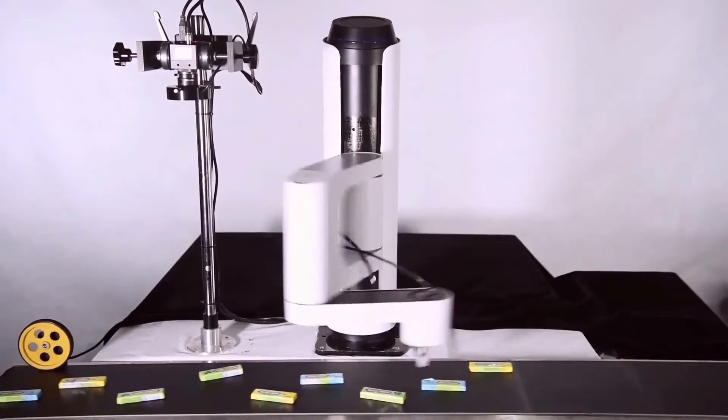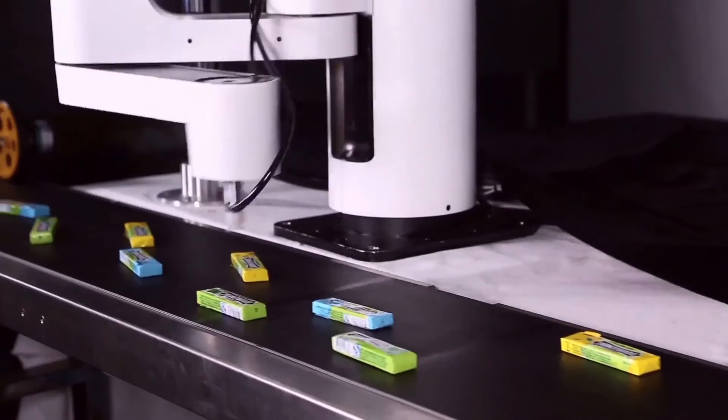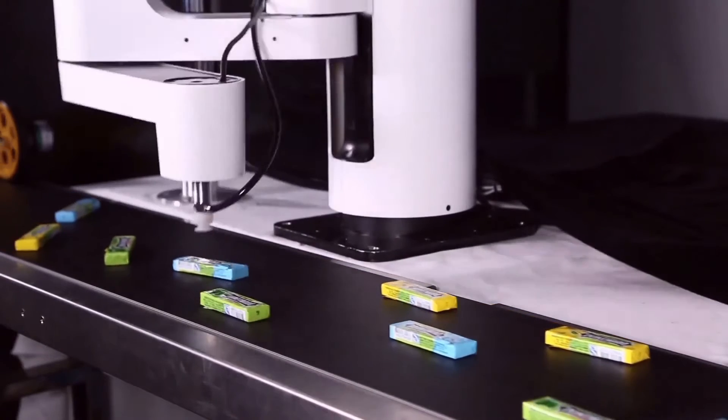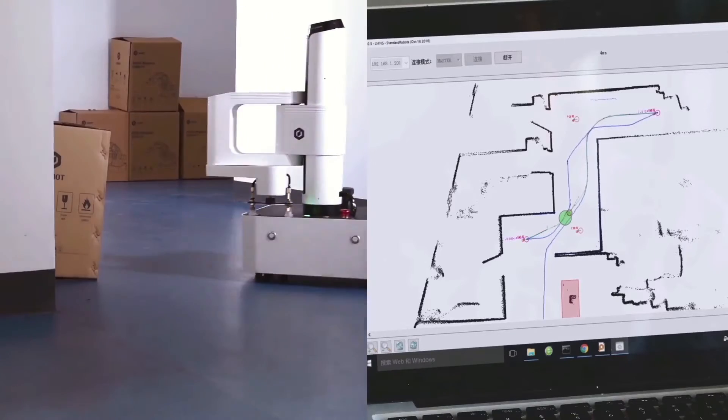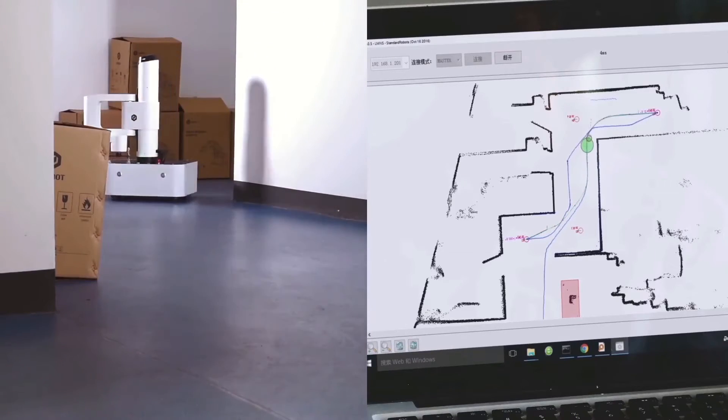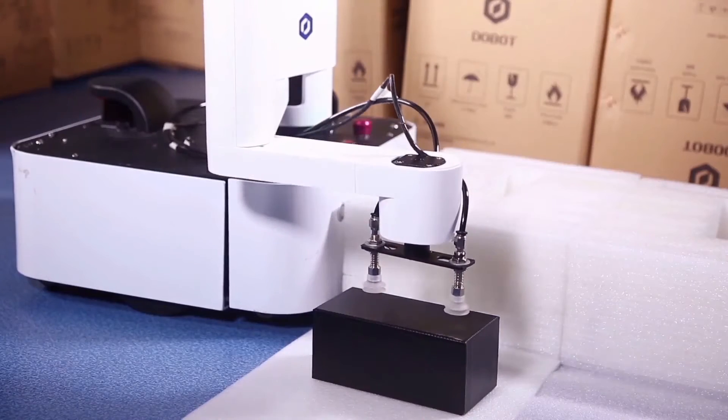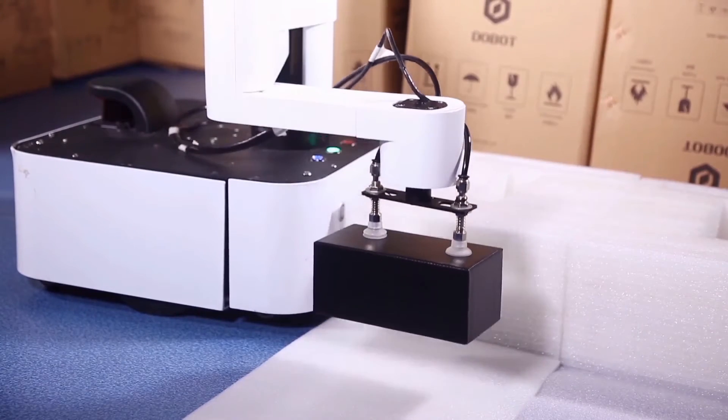Ultimately, Dubot M1 is built to replace manpower and production line, working day and night non-stop. The built-in mapping and path planning system provides this excellent mobility, providing inventory management service in your warehouse.